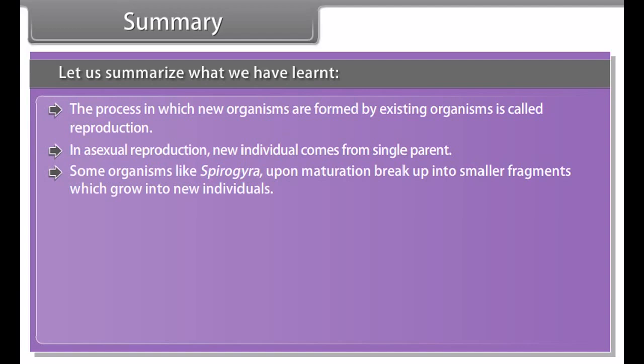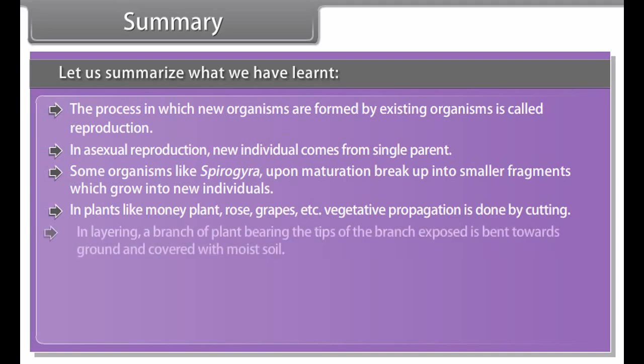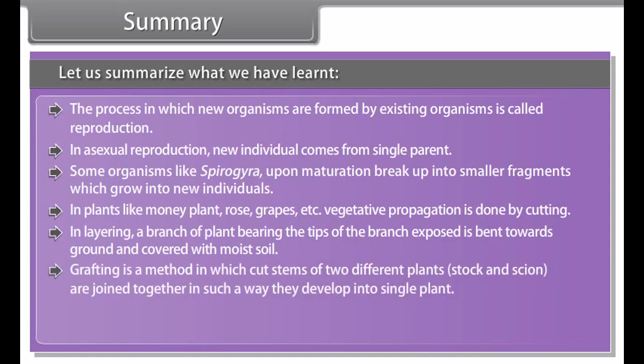Tissue culture is also known as micropropagation or in vitro propagation because it takes place outside the parent plant body in a test tube using an artificial environment. It is being used for the production of ornamental plants like orchids, dahlia, and carnation.